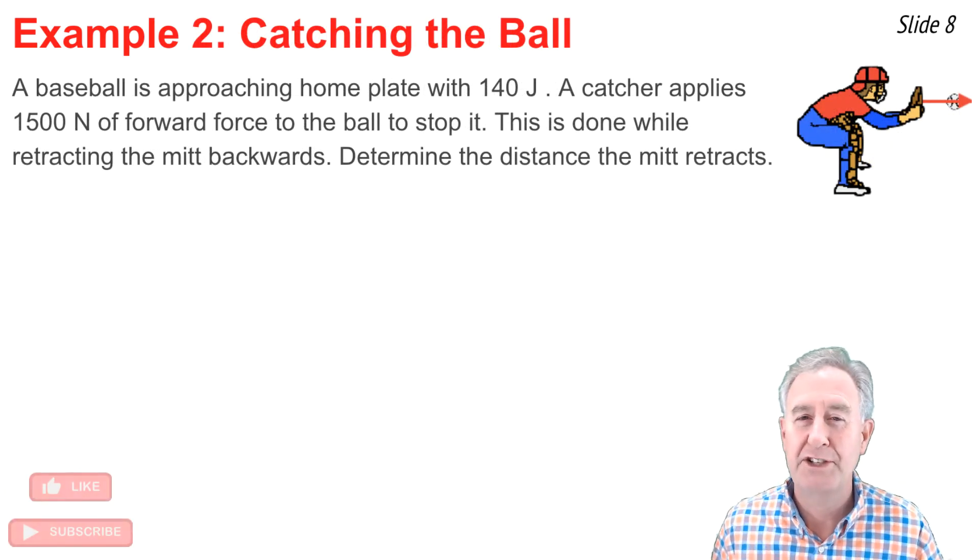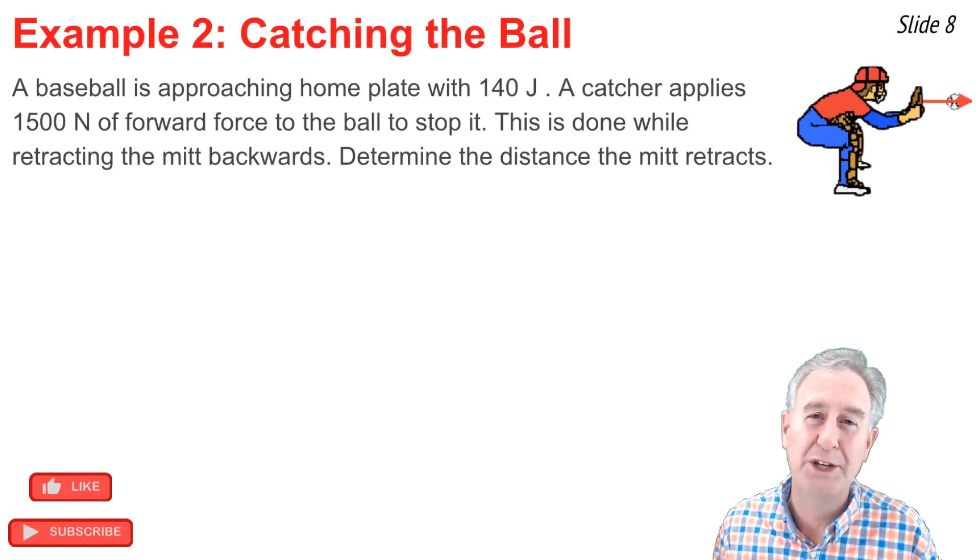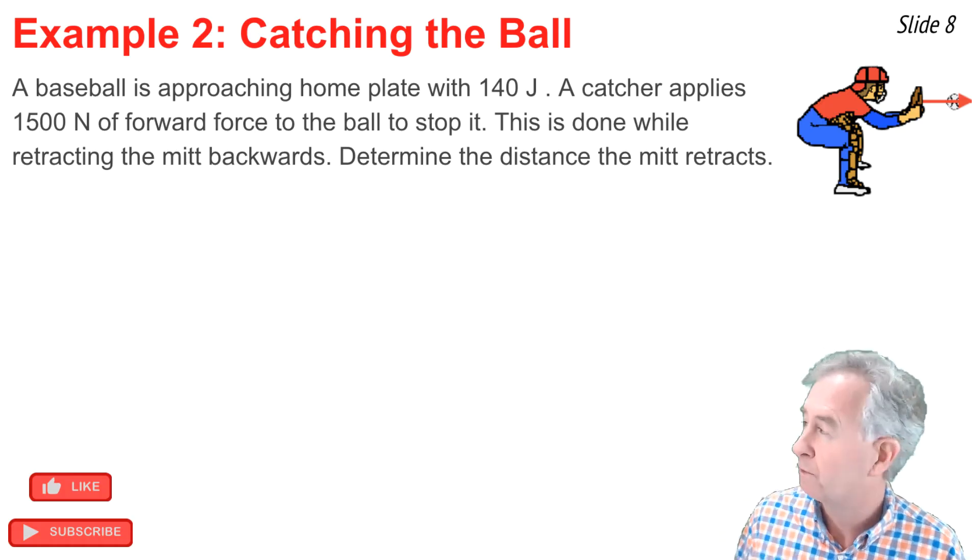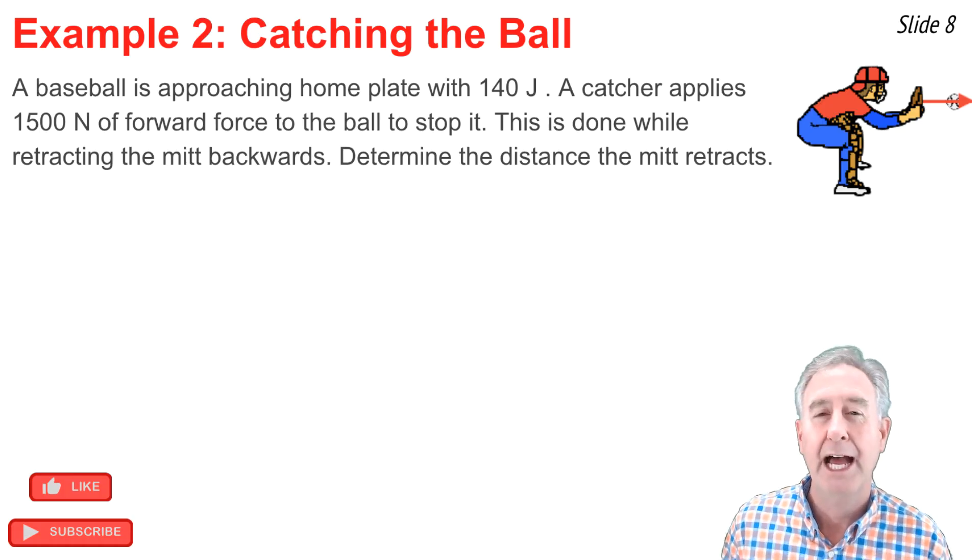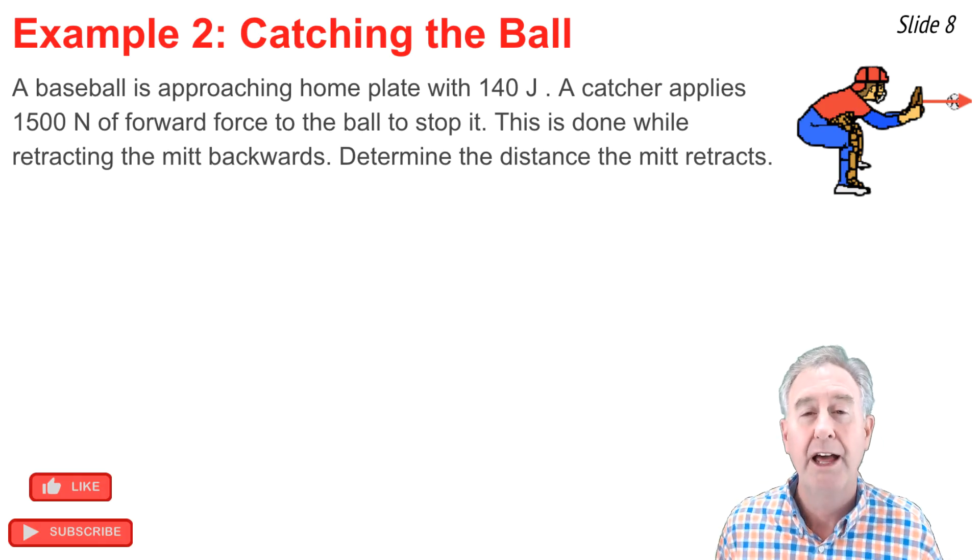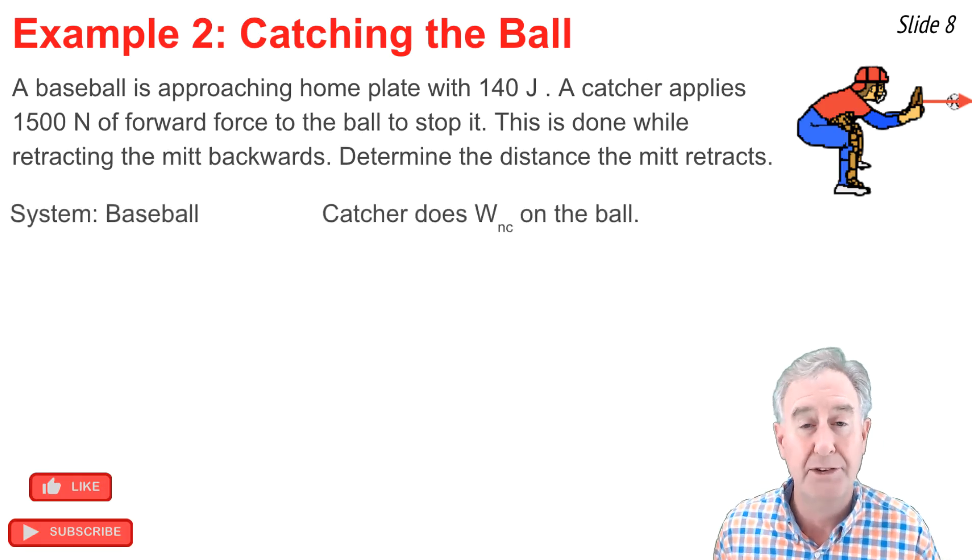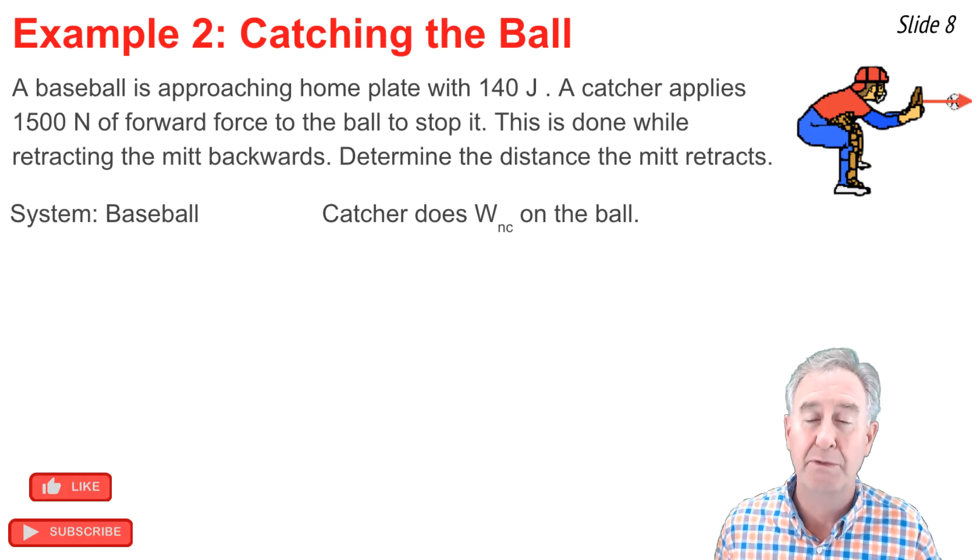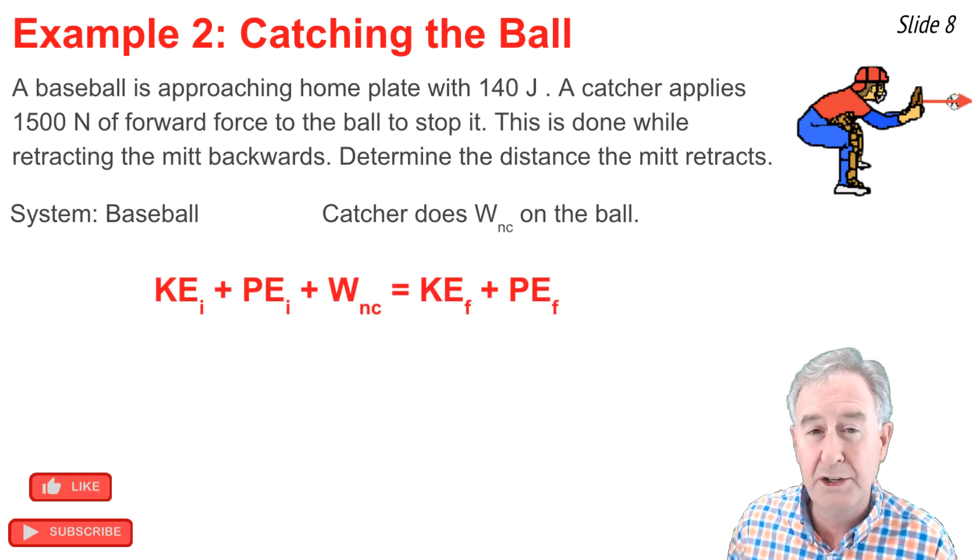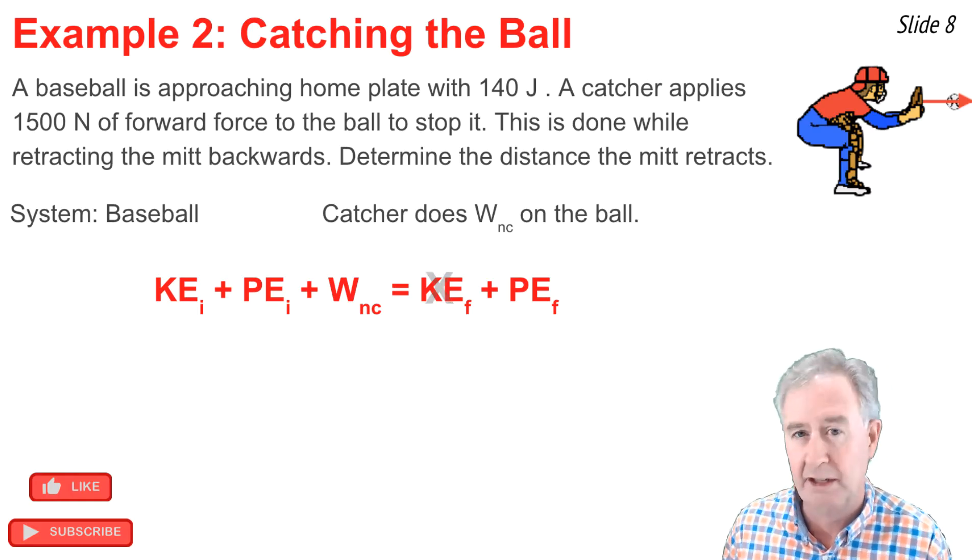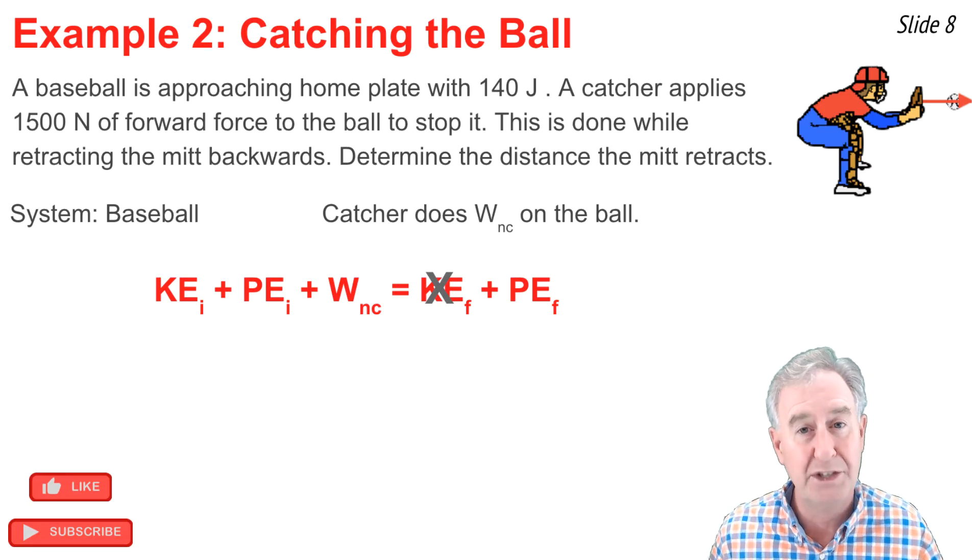In my second numerical example, a baseball is approaching home plate with 140 joules of kinetic energy and a catcher applies a 1500 newton forward force on the ball to bring it to a stop. I want to know the distance over which the mitt retracts backwards while catching that baseball. I'm going to begin by defining the system as the baseball and it's the catcher's mitt that's doing work upon the ball from outside the system. It's a non-conservative force doing negative work. I'm going to write my work energy equation. On the right side is the kinetic energy final and I'm going to cancel it because the ball finally is stopped.